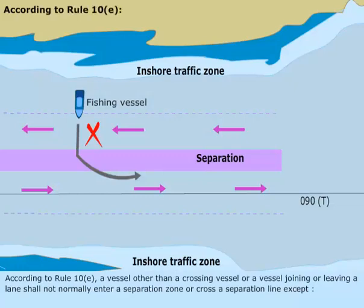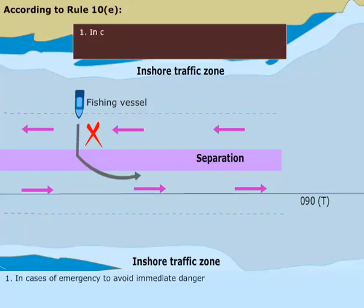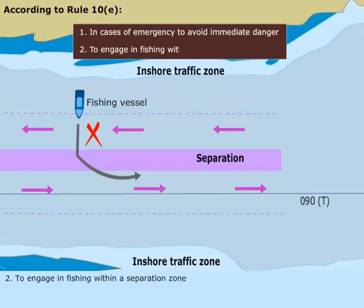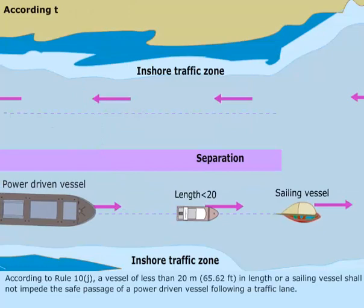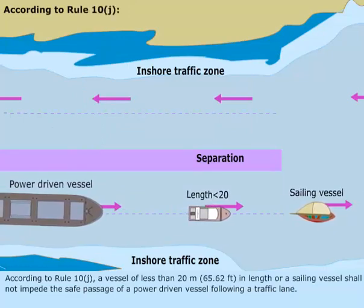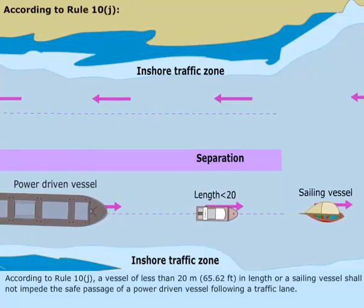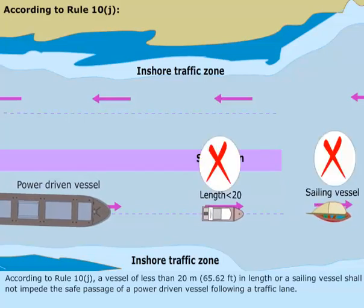According to Rule 10e, a vessel other than a crossing vessel or a vessel joining or leaving a lane shall not normally enter a separation zone or cross a separation line except: 1. In cases of emergency, to avoid immediate danger. 2. To engage in fishing within a separation zone. According to Rule 10j, a vessel of less than 20 meters or 65.62 feet in length or a sailing vessel shall not impede the safe passage of a power-driven vessel following a traffic lane.